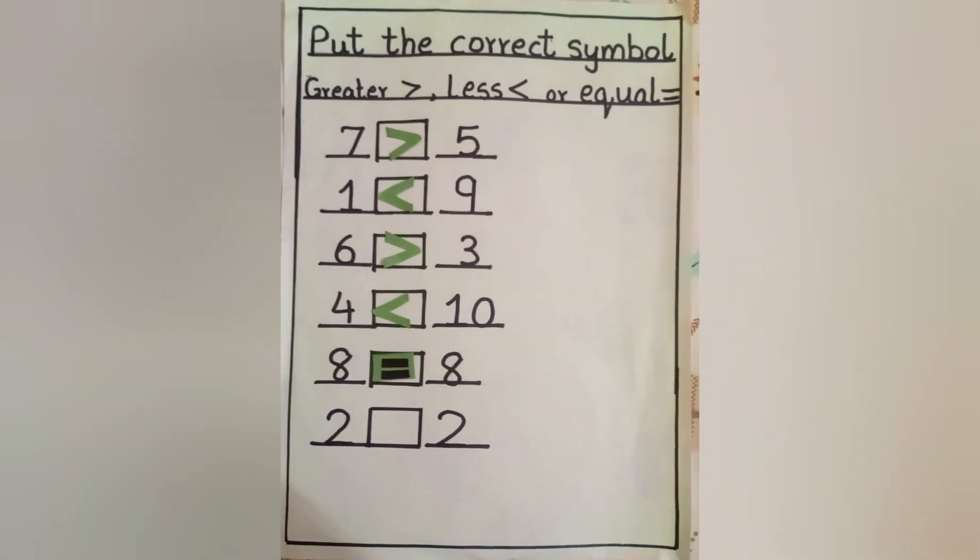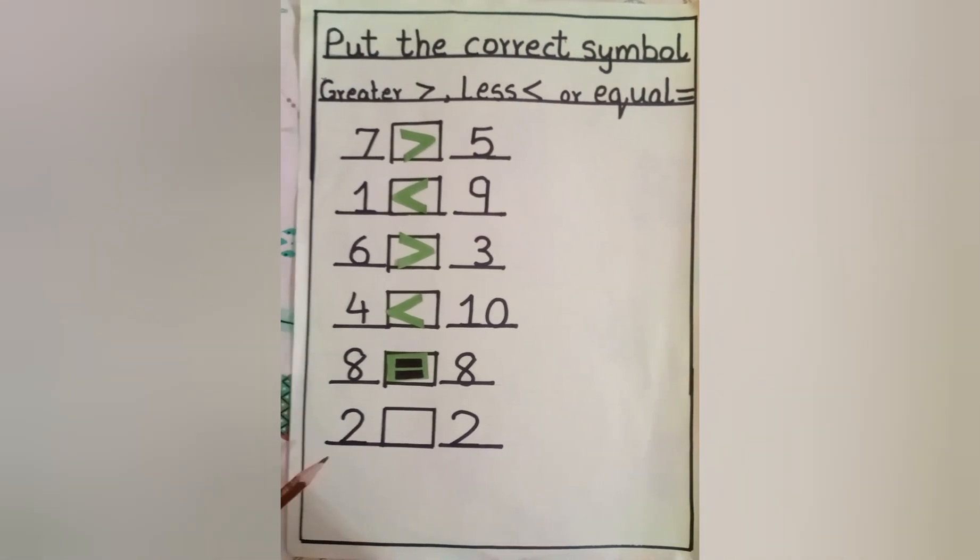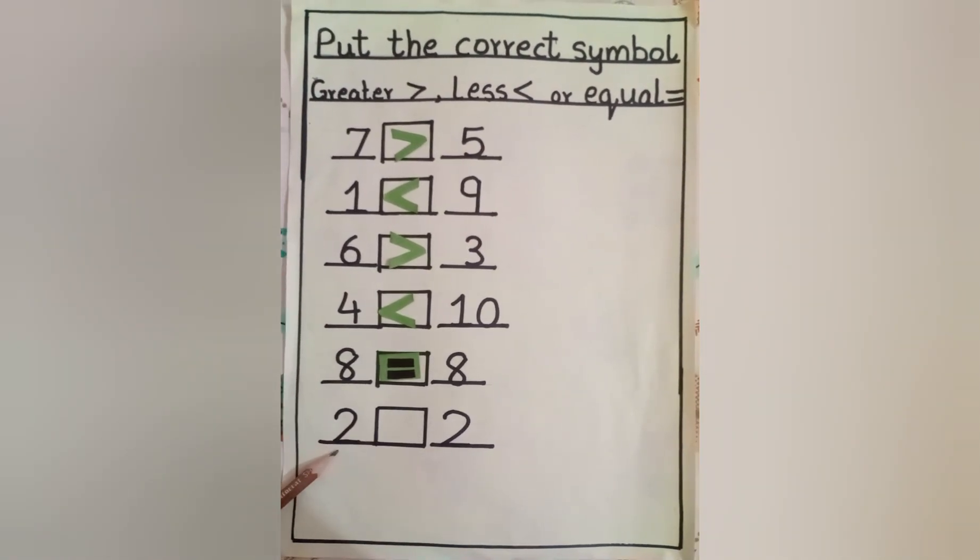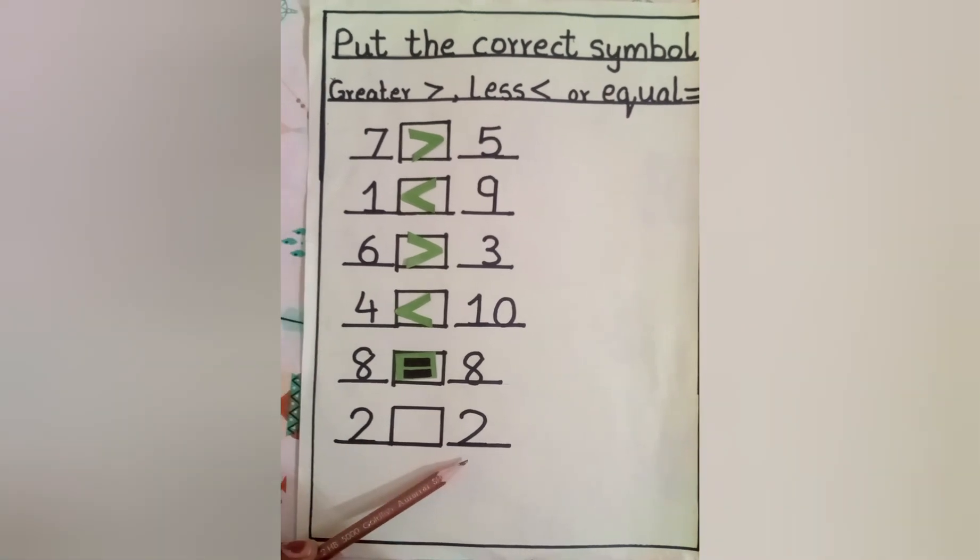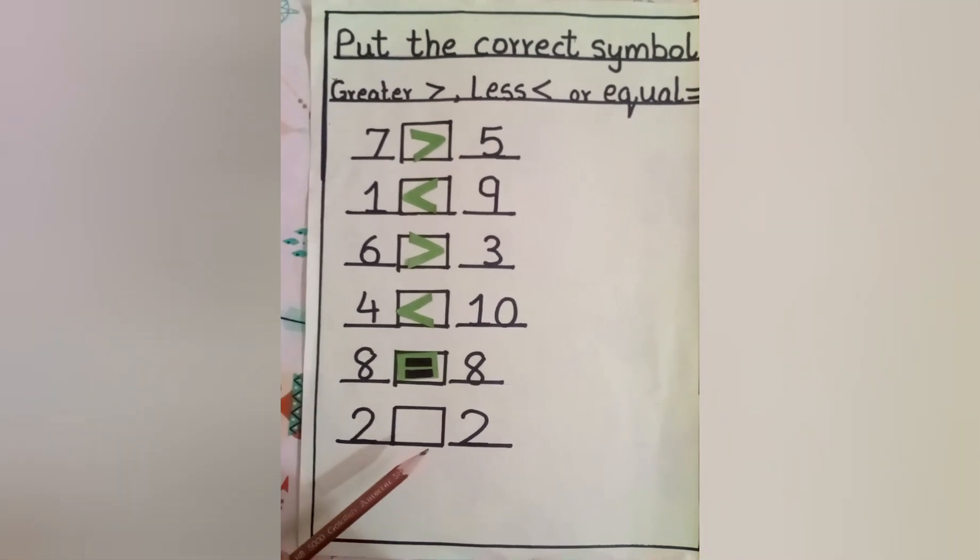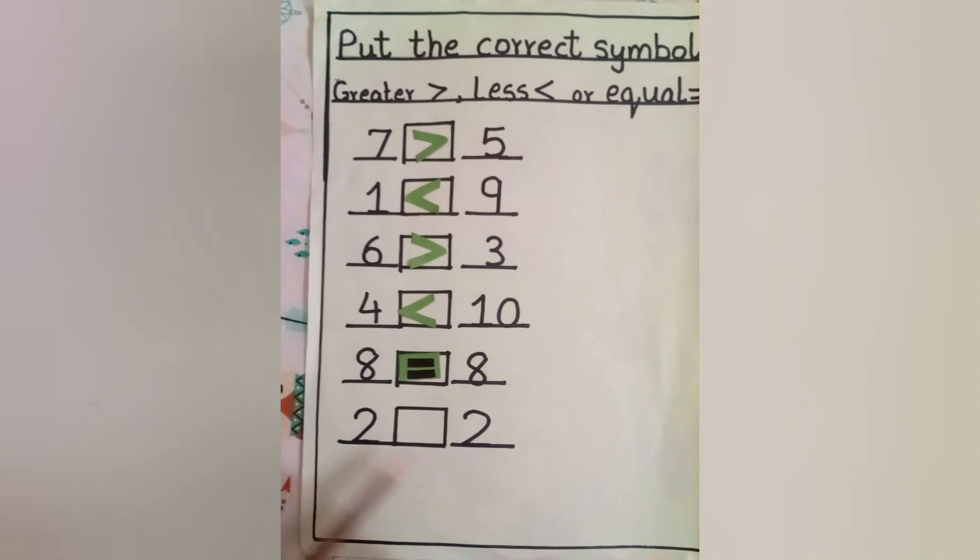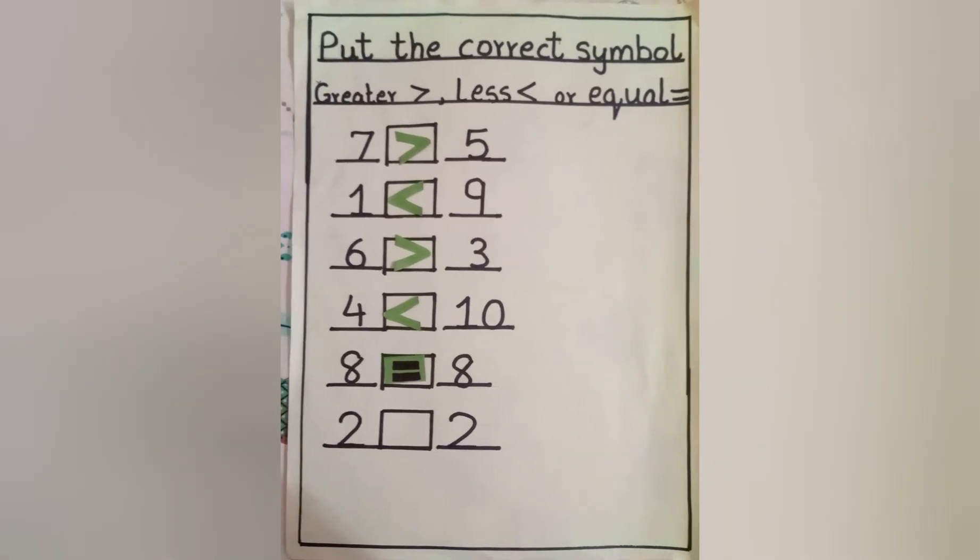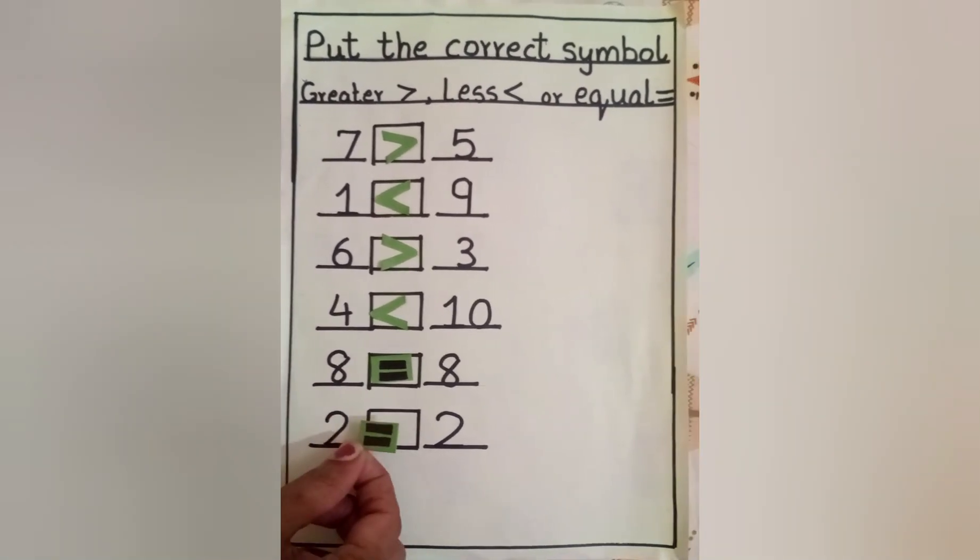Now come to the last number. Which number two is big? This one or that one? Yes, they both are same. So we will put equal sign over here.